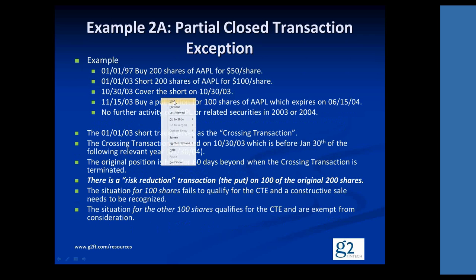With that, we'll move on to a twist on the previous example. We're going to buy 200 shares of Apple this time and short 200 shares of Apple on the same dates as the previous examples. We're going to cover the short, but this time on our risk reduction transaction, we're only going to reduce the risk of half of the original shares — so that's going to throw an interesting twist into things. Checking rules one through four: rules one and two must always be satisfied, and they are. The crossing transaction is eliminated before January 30, 2004, and the original Apple shares are held for 60 days beyond that date.